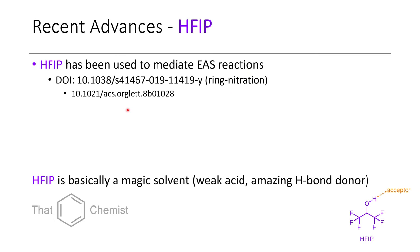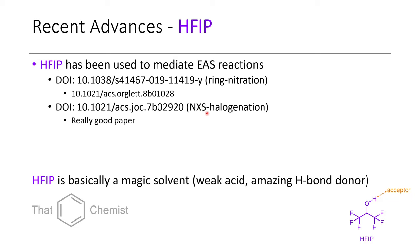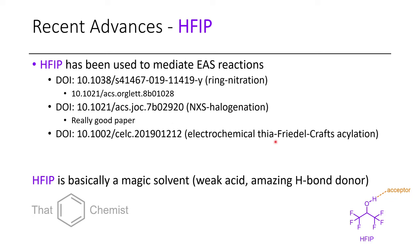Recently, there have been a few advances using HFIP — the magic solvent strikes again. One paper shows nitration of benzene rings using both nitric acid and N-nitrosaccharin. There are also examples of N-halosuccinimide halogenation in HFIP. Finally, there's the electrophilic thia-Friedel-Crafts acylation reaction, where sulfonyl chlorides or sulfonates and sulfinates — SO2 minus salts — are electrochemically converted to sulfur(VI) species and then used in essentially a Friedel-Crafts reaction but with a sulfonyl instead of a carbonyl. This paper highlights the interesting use of electrochemistry in synthesis.